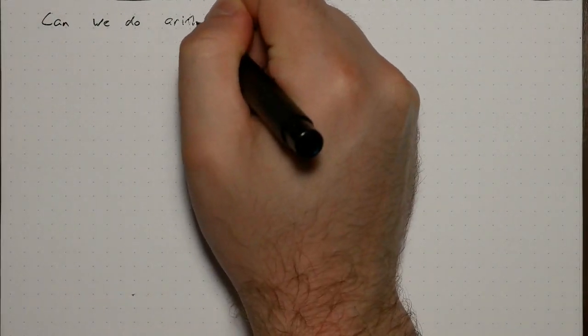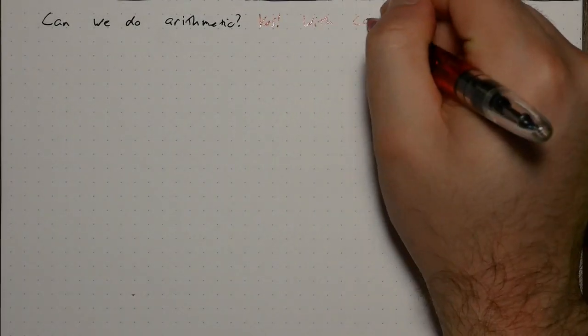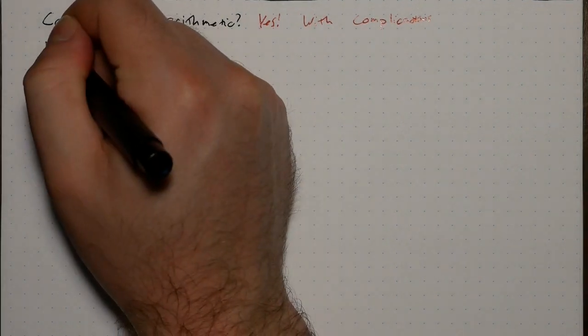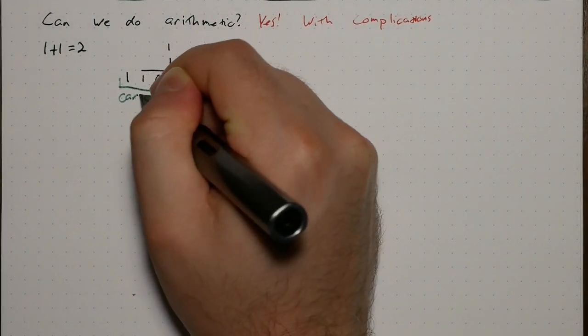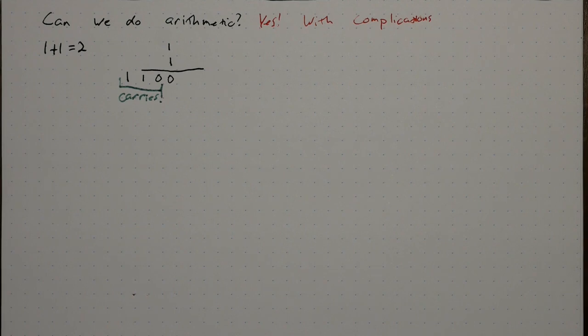Can we do arithmetic? Yes, but there are some complications. First off, addition. 1 plus 1 is 2, and 2 is 1100. So you have to carry a 1 and a 1 and a 0. That's three carries. How does it work?